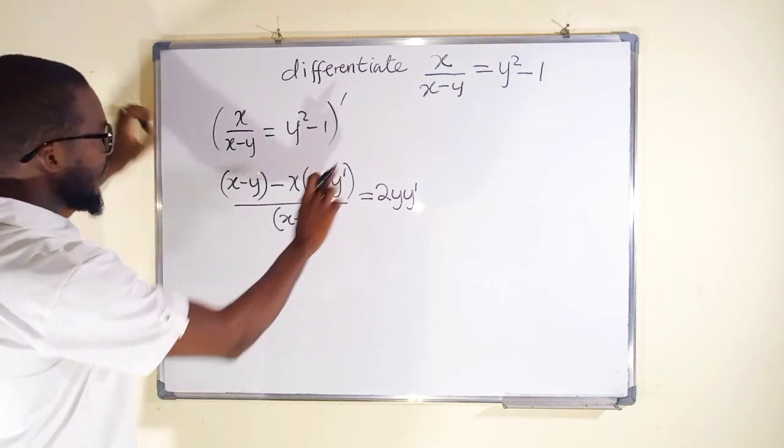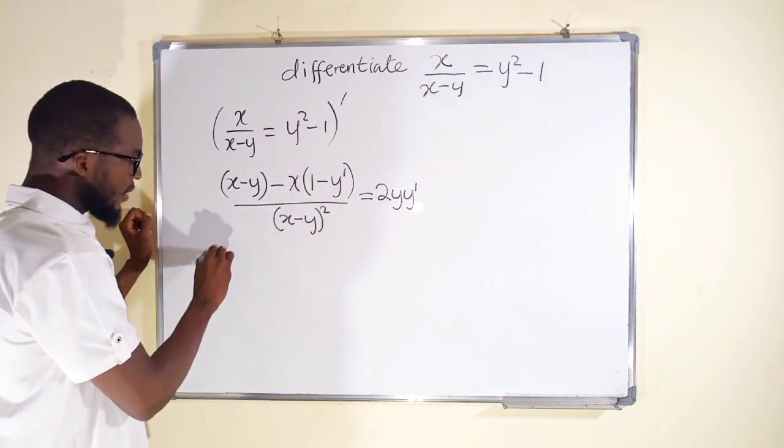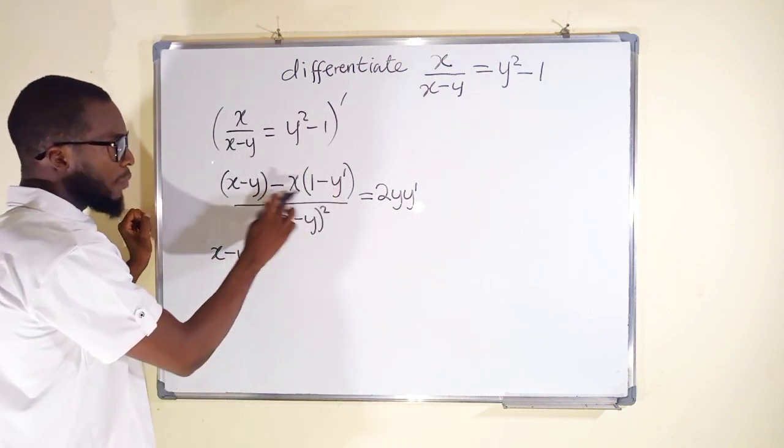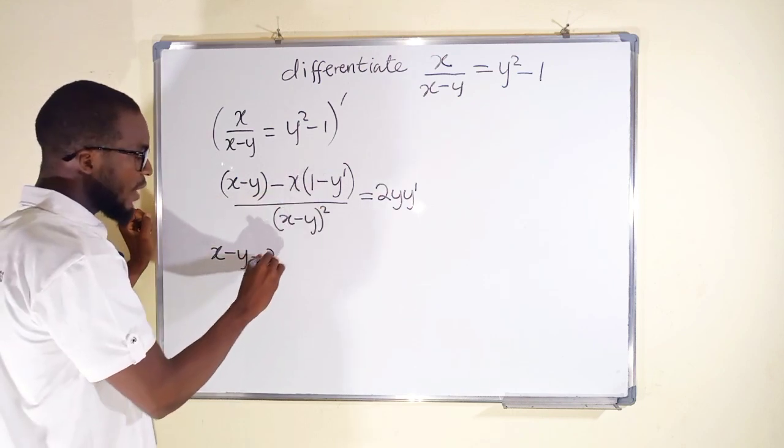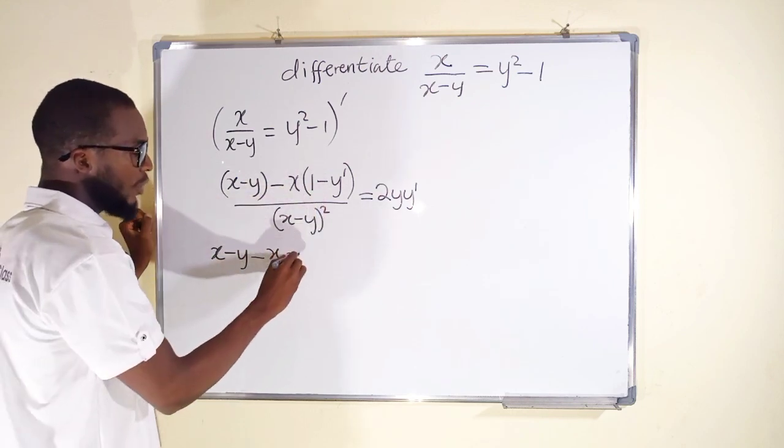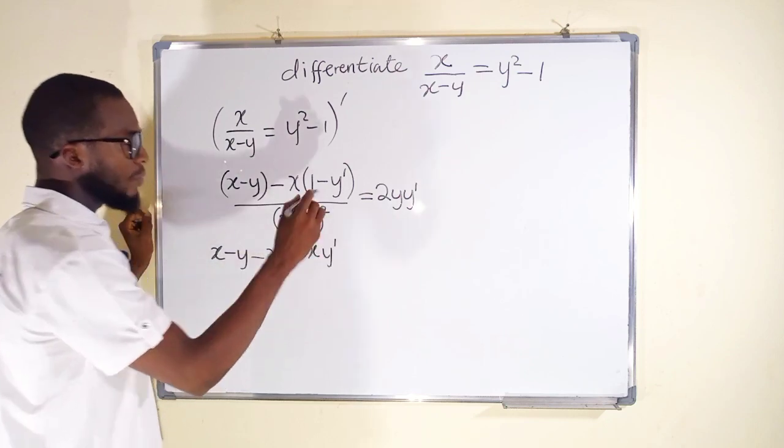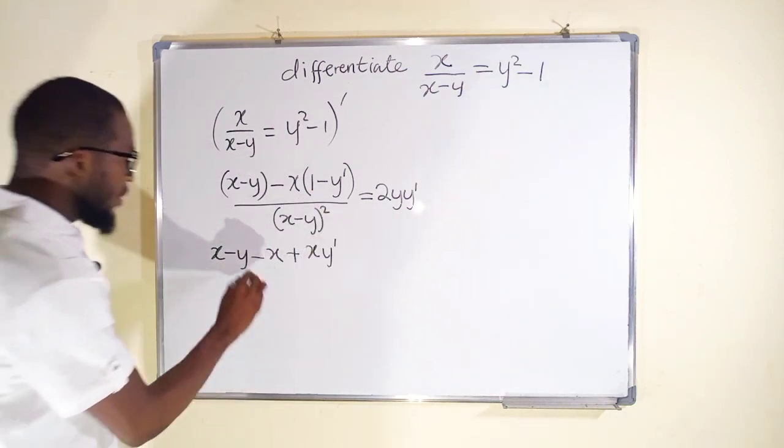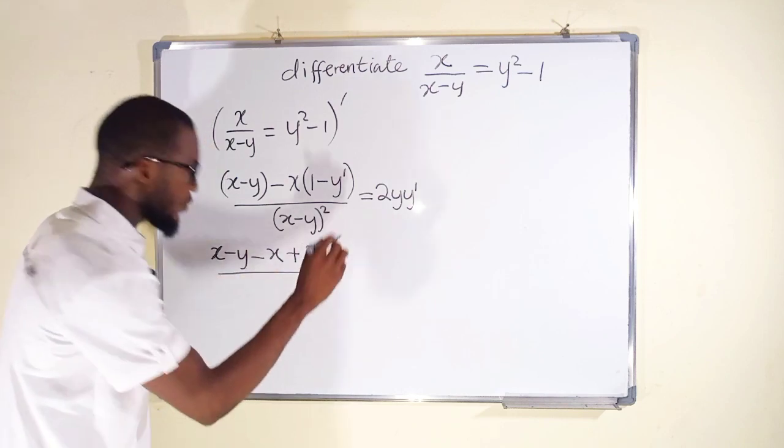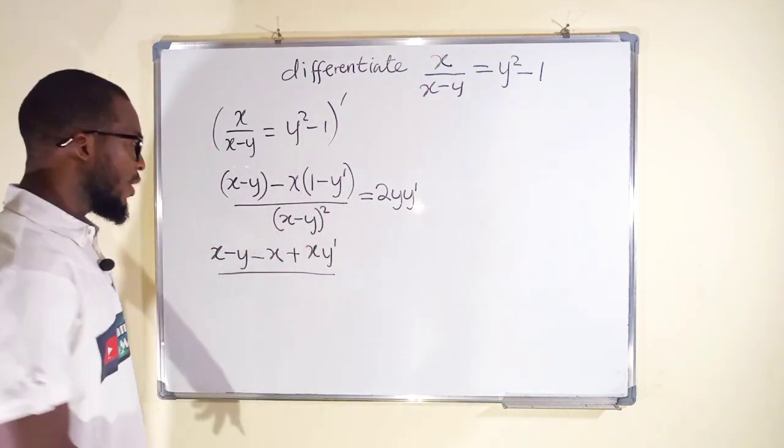Okay, now let us expand this. We have x minus y minus x times 1 is minus x. Minus minus is plus. x times y prime is xy prime, divide by, if we like we can expand this.